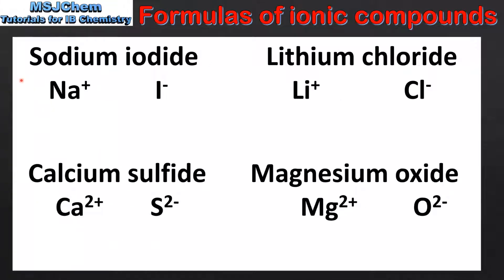In the first examples we look at, the ions have charges of equal magnitudes but opposite signs. These are sodium iodide, lithium chloride, calcium sulphide, and magnesium oxide. Starting with sodium iodide, which is composed of sodium ions and iodide ions: the sodium ion has a 1+ charge and the iodide ion has a 1− charge. To make the ionic compound neutral we need 1 of each type of ion, therefore the formula is NaI.